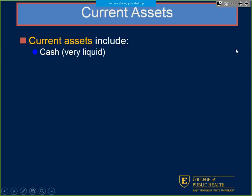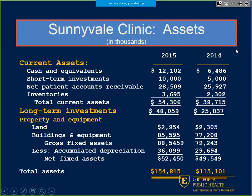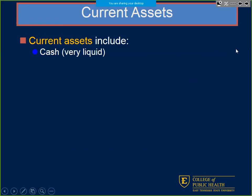Look at the way current assets are listed: cash, short-term investments, net patient receivables, inventory, then long-term with property, land, and on down. They're listed specifically that way — not just thrown up there. Current assets are very, very liquid.